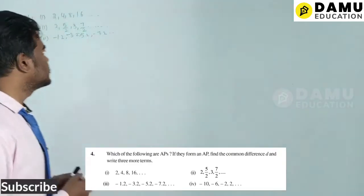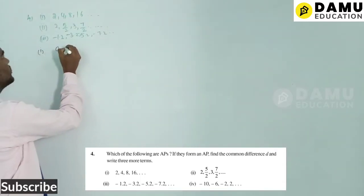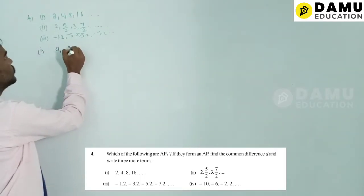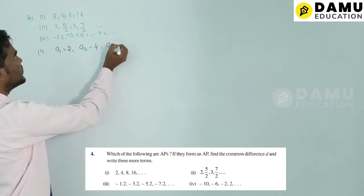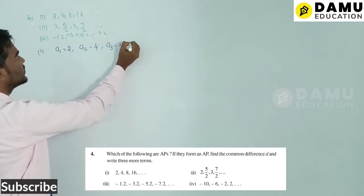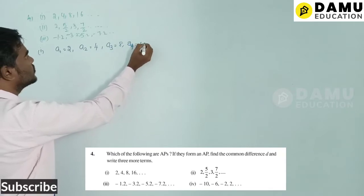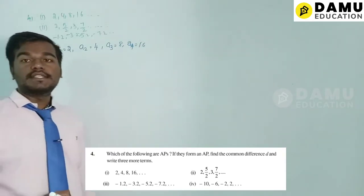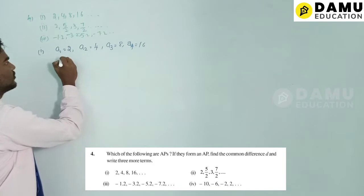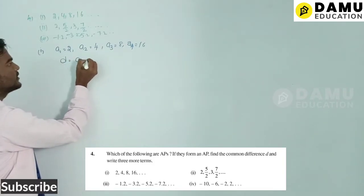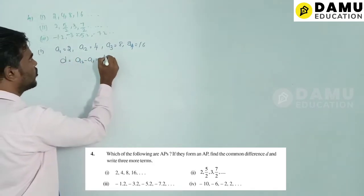For the first series, a1 = 2, a2 = 4, a3 = 8, a4 = 16. The common difference d = a2 − a1 = 4 − 2 = 2.